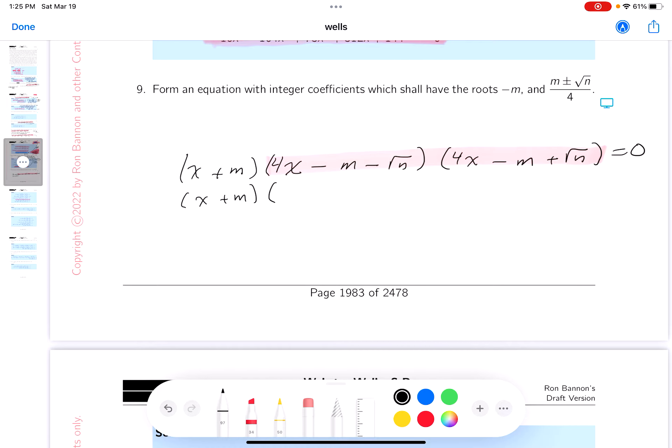What's 4x times 4x? 16 x squared. That's not too bad. Then what do you get? Minus 4mx. I'm distributing this across those three terms. Then what do you get? Plus 4 root nx. That's done.